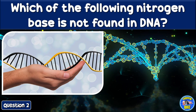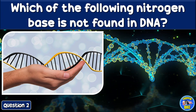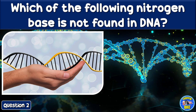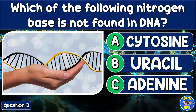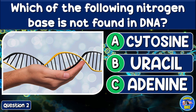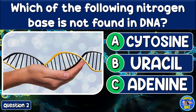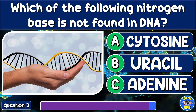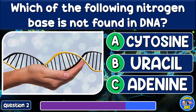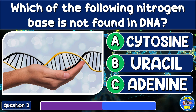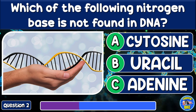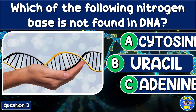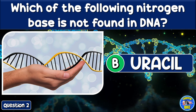Which of the following nitrogen bases is not found in DNA? Cytosine, uracil, or adenine? Uracil.